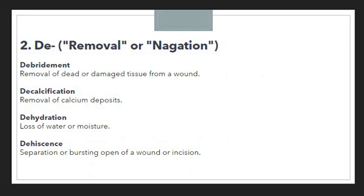The next prefix is DE. DE is used to denote the removal or negation of something. If we are removing something from the body, we make use of the prefix DE to show removal. Similarly, to show negation, we again use DE. The first example is debridement, which means removal of dead or damaged tissue from a wound.